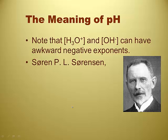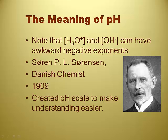Like we just said, hydronium and hydroxide, those negative exponents are a bit awkward. And it took this gentleman by the name of Søren Sørensen, about 1910, so almost 100 years ago, actually a little bit more than 100 years ago now, he created a pH scale to make understanding acids and bases easier.